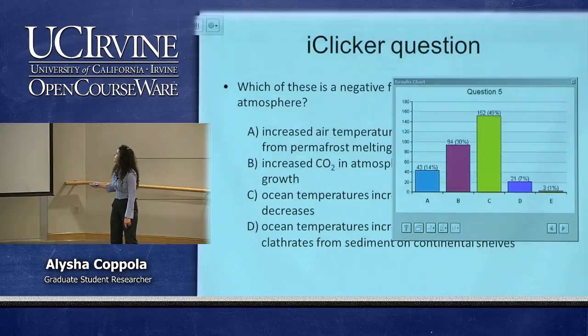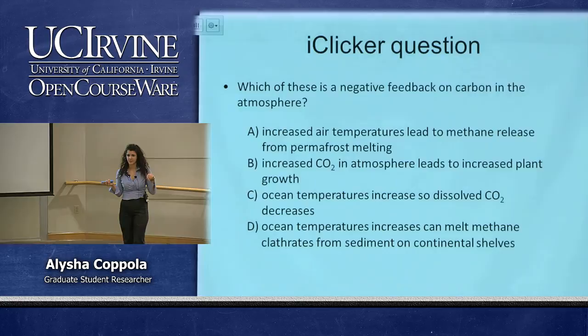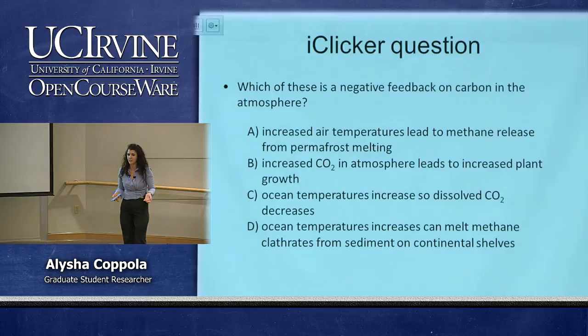C is the negative feedback. When ocean temperatures increase, you're not able to remove as much CO₂ from the atmosphere because the warmer ocean can't dissolve as much CO₂. The ocean is not able to take up as much carbon as it would in a colder climate system — that's the negative feedback.